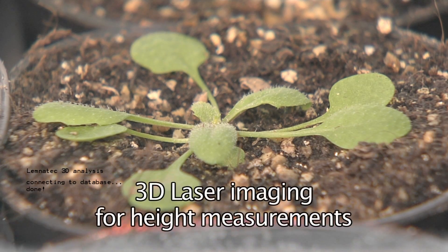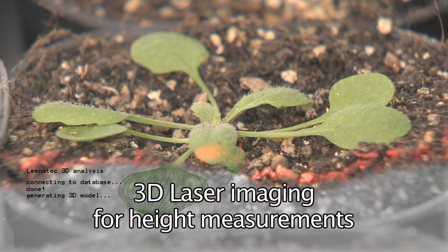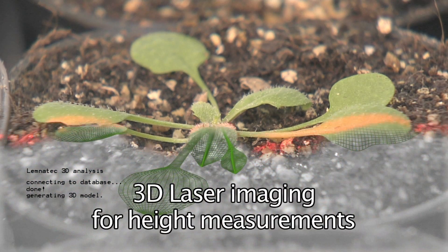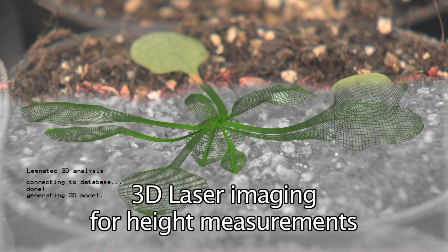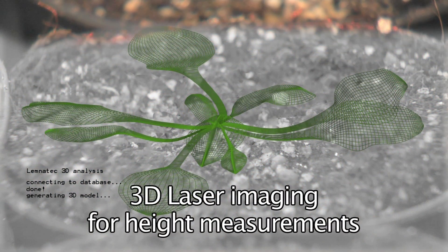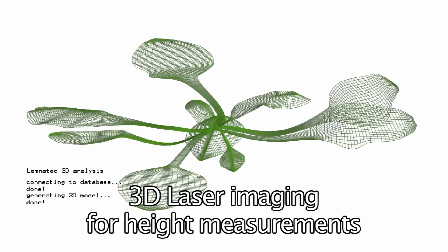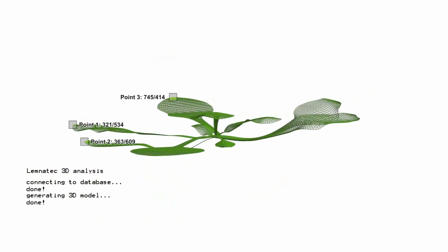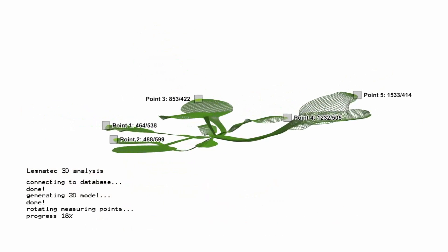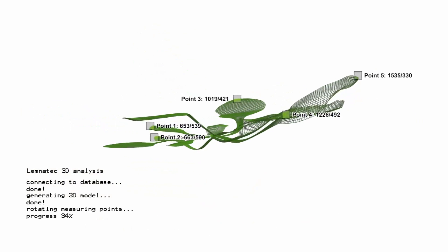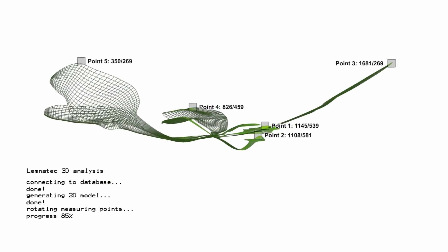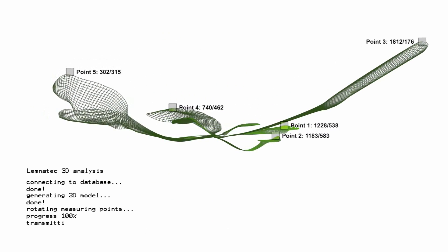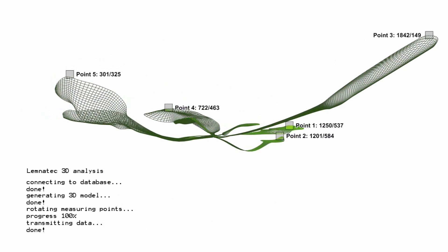The application of laser triangulation for height scanning closes the gap between two-dimensional imaging from top and three-dimensional imaging from the side, which would not be possible in trays. Height differences of up to 200 microns due to growth or, for example, leaf movement can easily be quantified by this method.